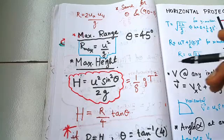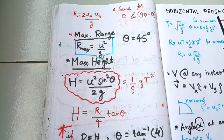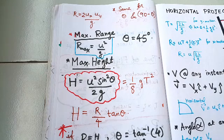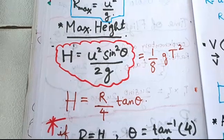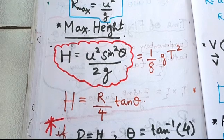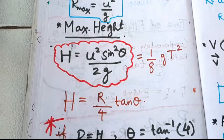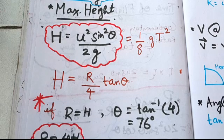Now for the maximum height: H is equal to u squared sin squared theta by 2g. We also have the relation H equals (1/8) g T squared. Another important relation is H equals R tan theta by 4.